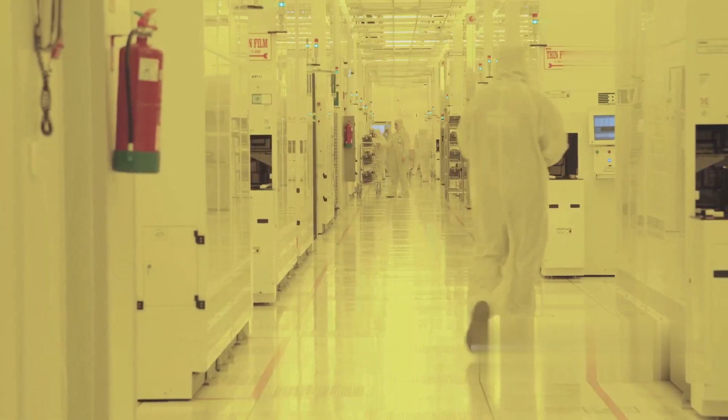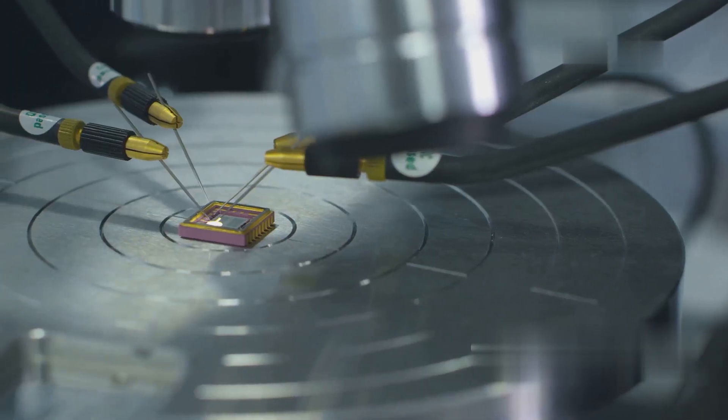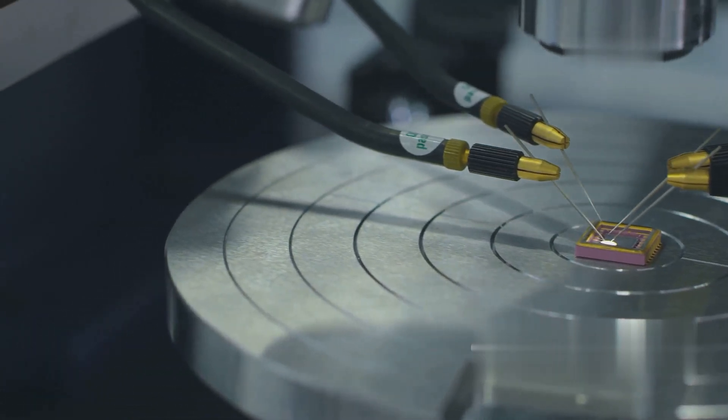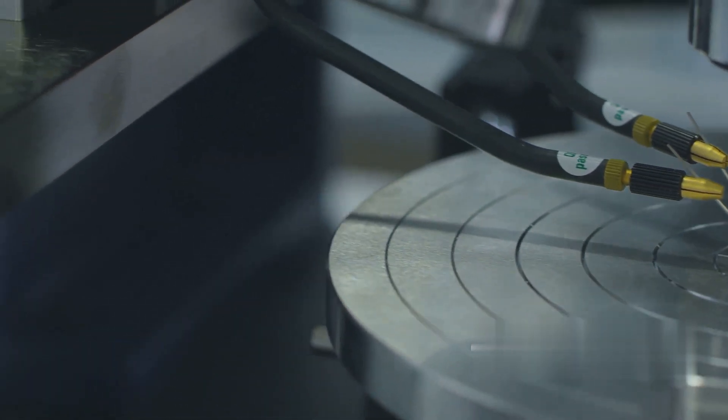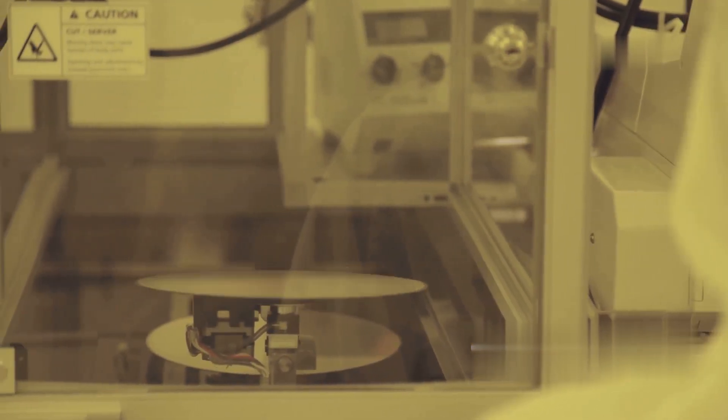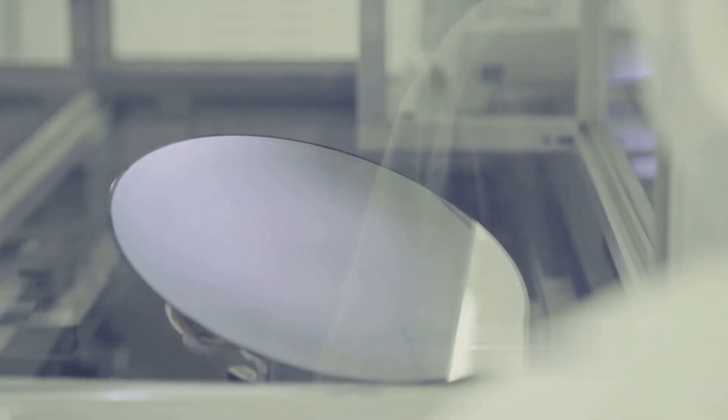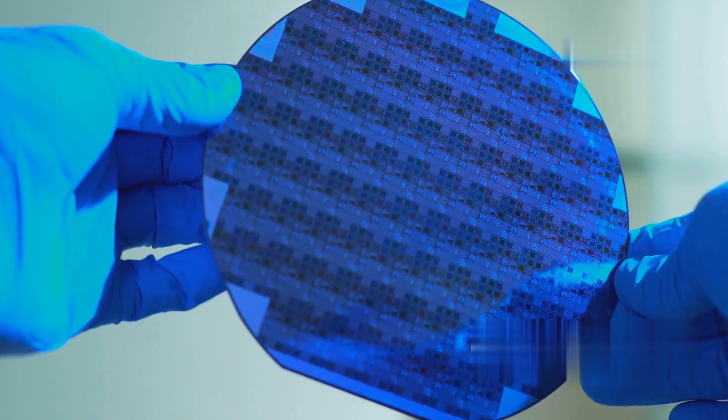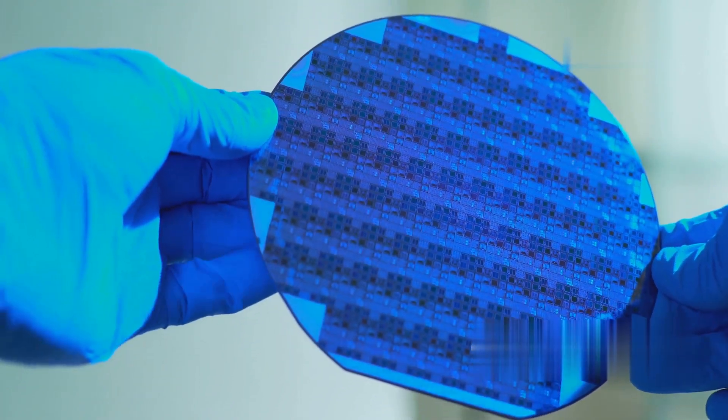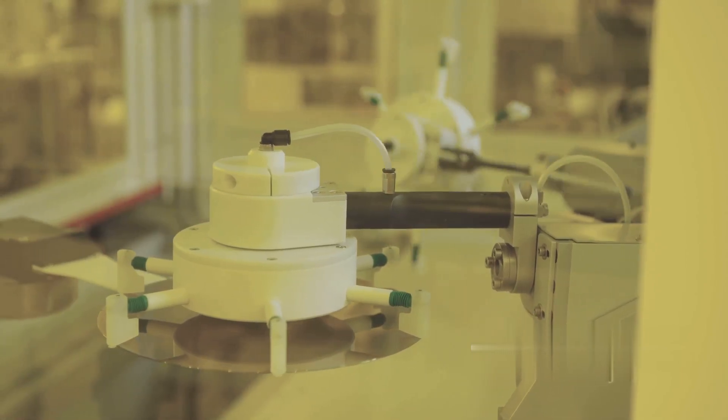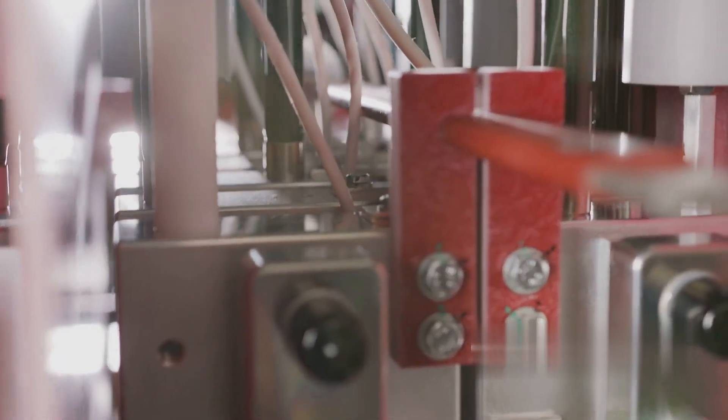Etching is the process of selectively removing material from the silicon wafer, sculpting the transistor structure according to the pattern defined by photolithography. There are two main types of etching, wet etching, which uses chemical solutions, and dry etching, which uses reactive gases. Wet etching involves immersing the wafer in a chemical solution that dissolves the exposed silicon dioxide or silicon. The unexposed areas protected by the photoresist remain intact. This method is relatively simple, but it can be difficult to control precisely, leading to less sharp features.